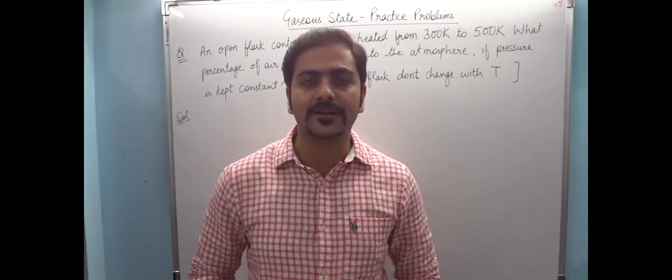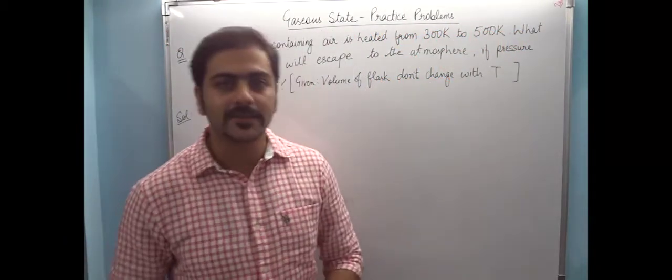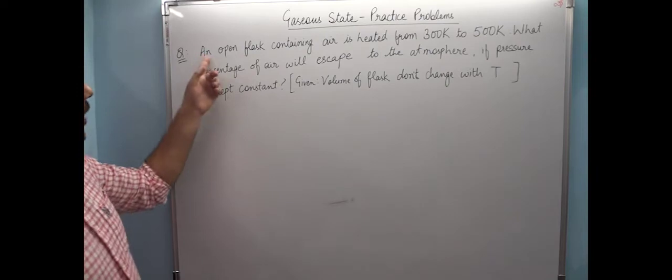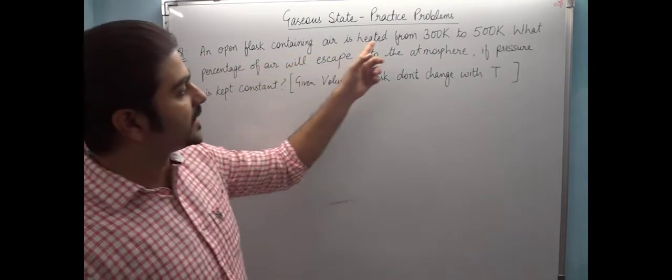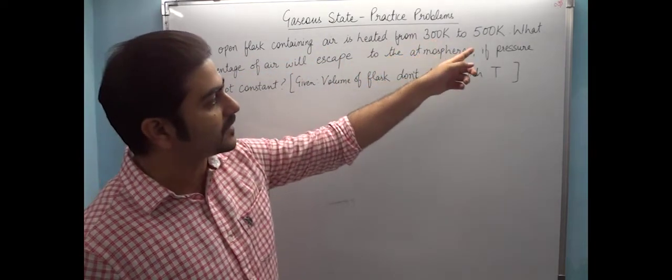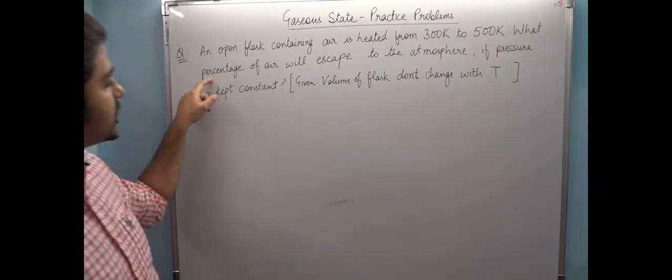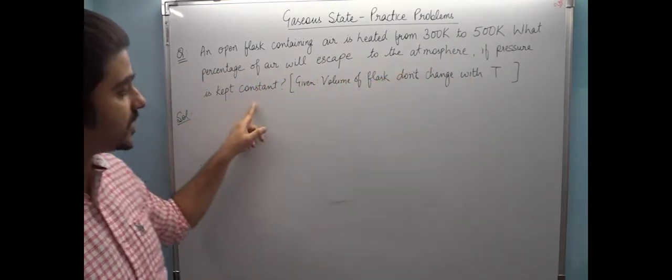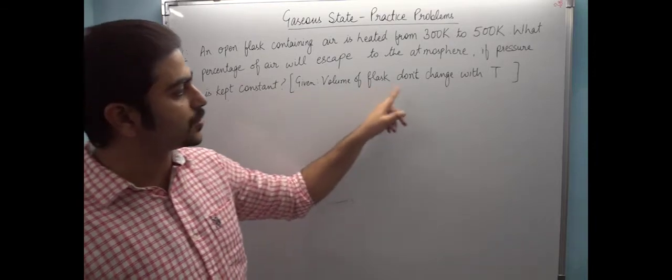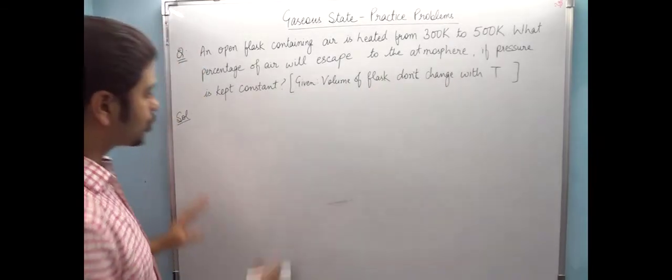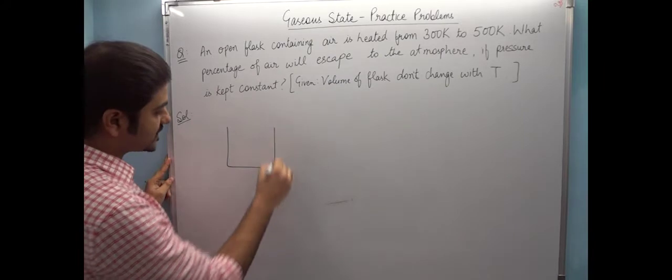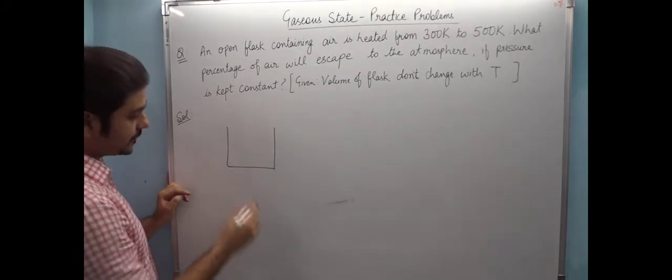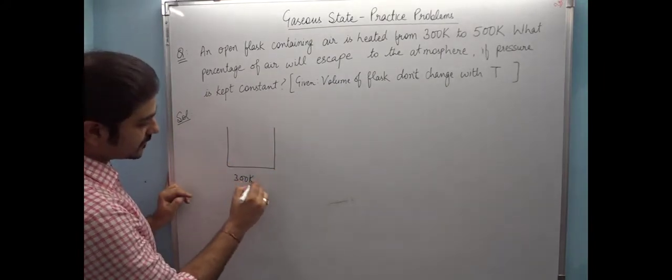Hi friends, let's do a practice problem on gaseous state. The question is: an open flask containing air is heated from 300 Kelvin to 500 Kelvin. What percentage of air will escape to the atmosphere if the pressure is kept constant? Given volume of flask doesn't change with temperature. So we have an open flask, temperature goes from 300 Kelvin to 500 Kelvin, volume is constant, and pressure is also constant.